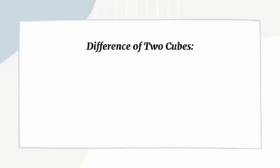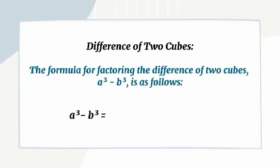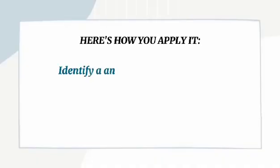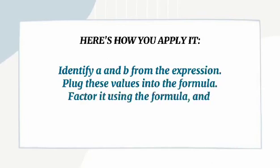For the difference of two cubes: A cubed minus B cubed equals A minus B, times A squared plus AB plus B squared. Here's how you apply it: Identify A and B from the expression. Plug these values into the formula. Factor it using the formula, and you will have the factored expression.